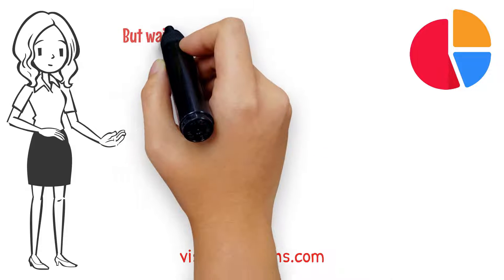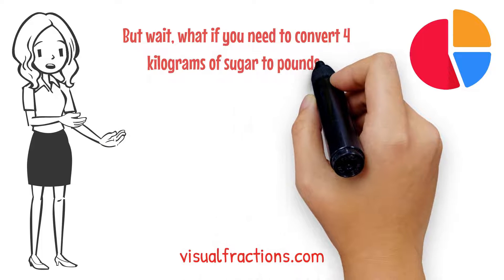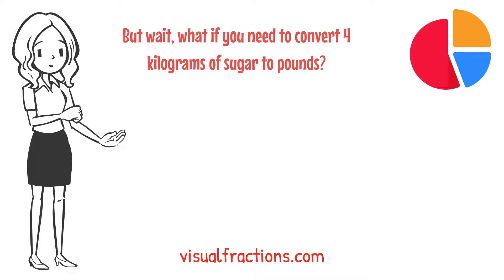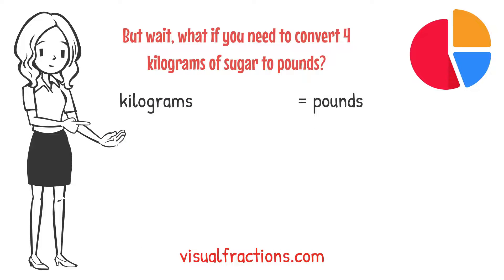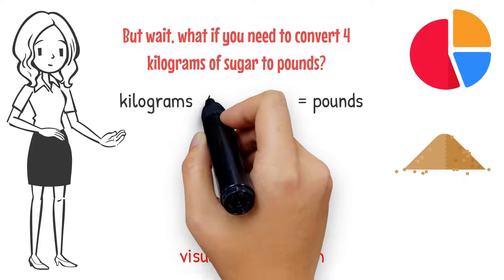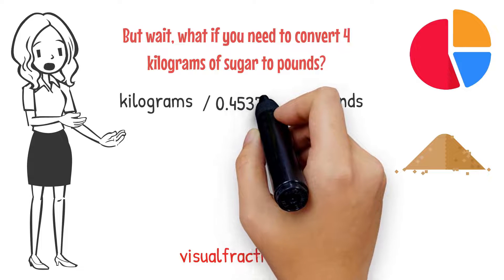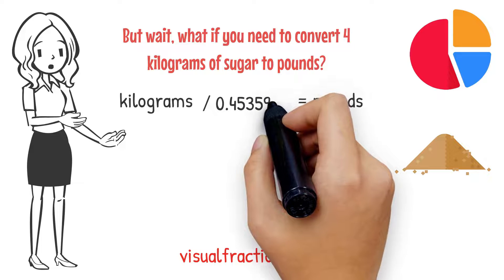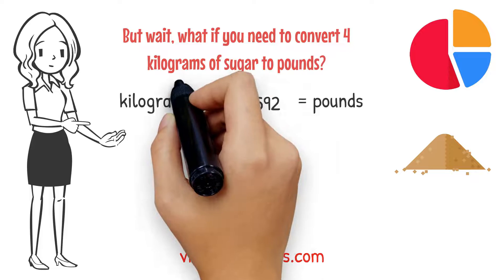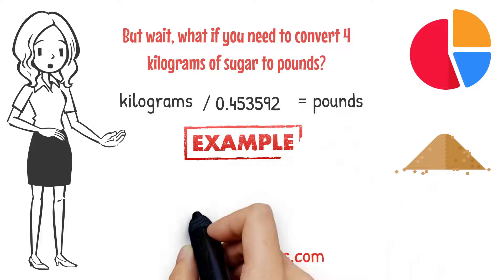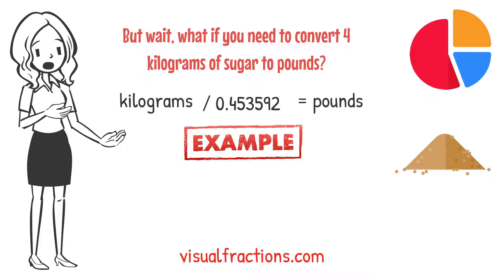But what if you want to convert 4 kilograms of sugar into pounds? Not a problem at all. To convert kilograms to pounds, you need to divide the number of kilograms by the conversion factor of 0.453592. Let's walk through an example of how to convert 4 kilograms of sugar to pounds.